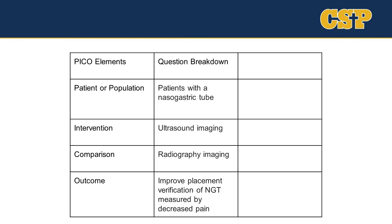Let's first break down the PICO question by its four PICO elements. Patient or population: patients with a Nasogastric tube. Intervention: ultrasound imaging. Comparison: radiography imaging. And our outcome would be improved placement verification of NGT measured by decreased pain.